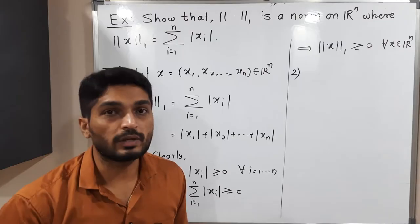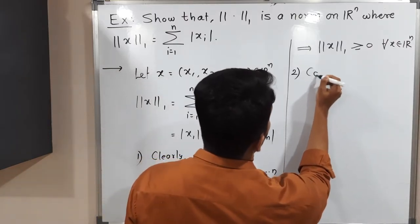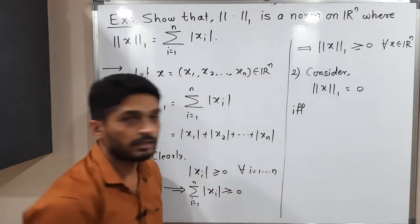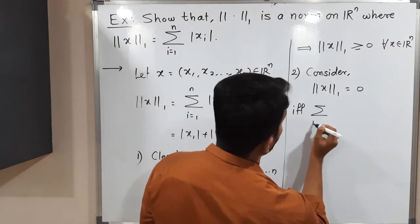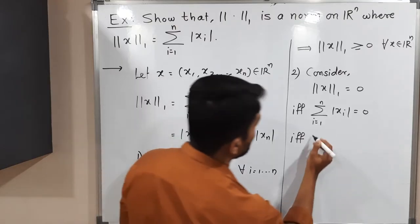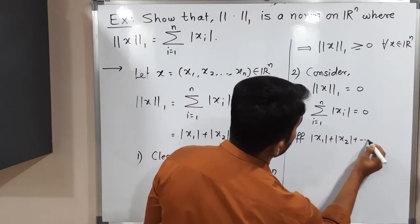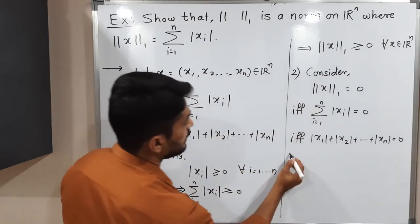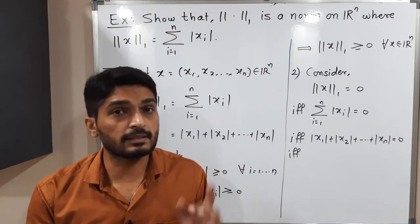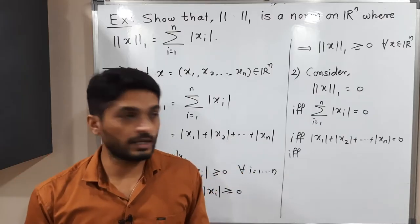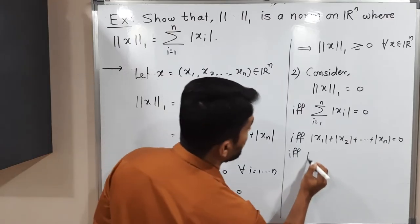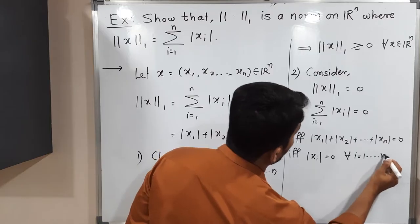Now for the second condition: norm₁(x) = 0 if and only if x = 0. Consider norm₁(x) = 0, which by definition means ∑|xᵢ| = 0 from i=1 to n, i.e., |x₁| + |x₂| + ... + |xₙ| = 0. Since each modulus term is non-negative, we are adding n non-negative numbers whose sum is zero. This means each entry must be zero.